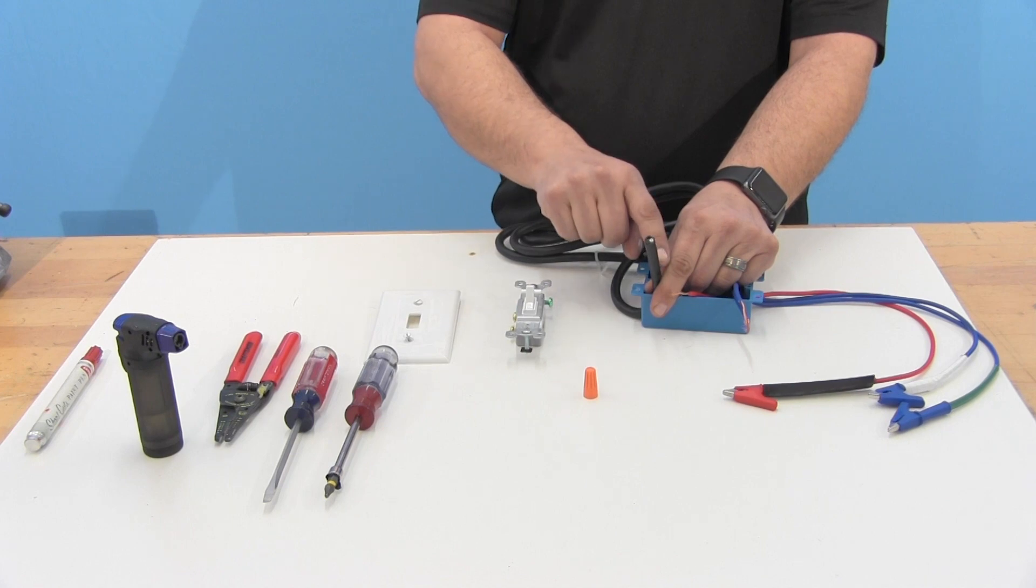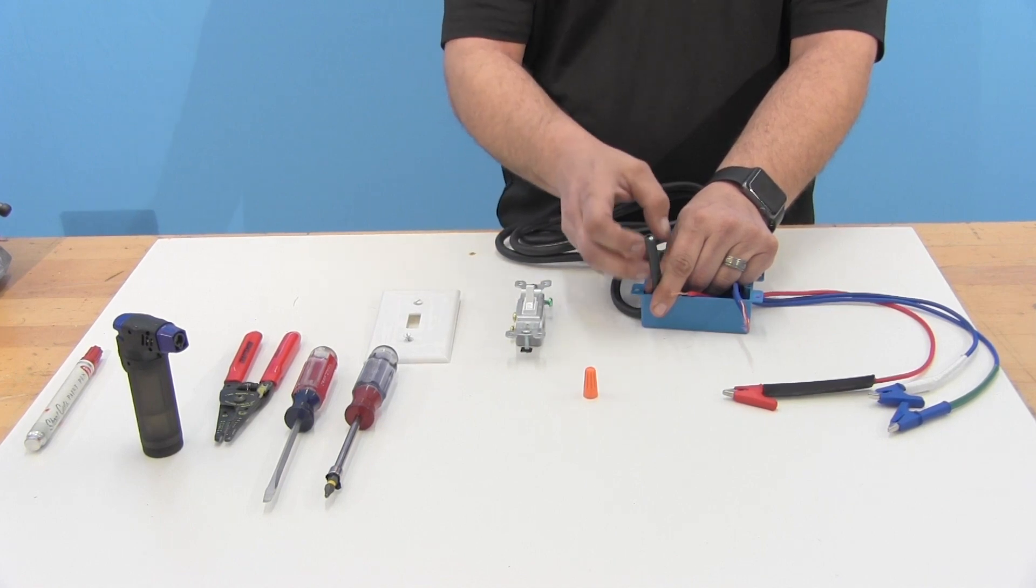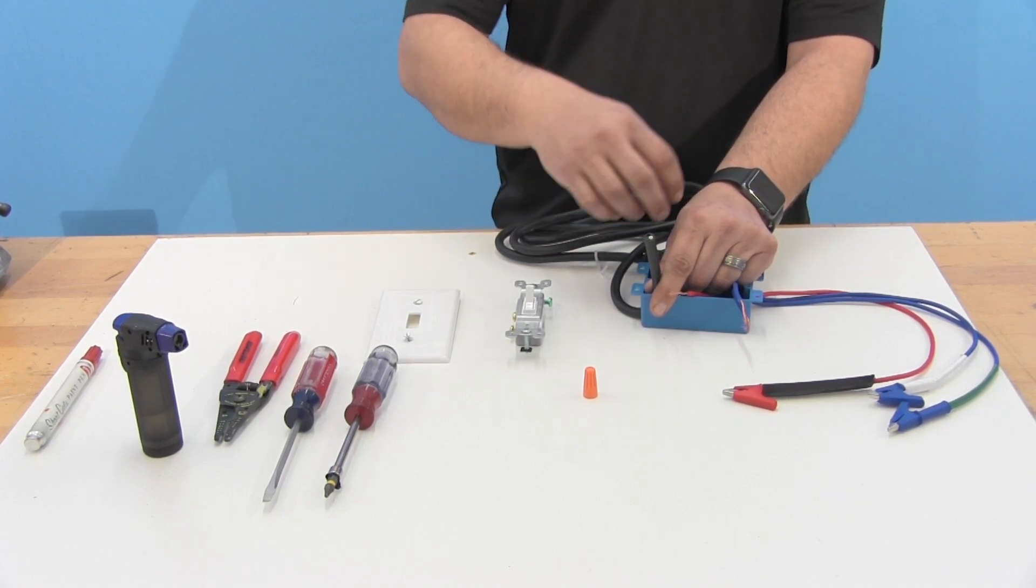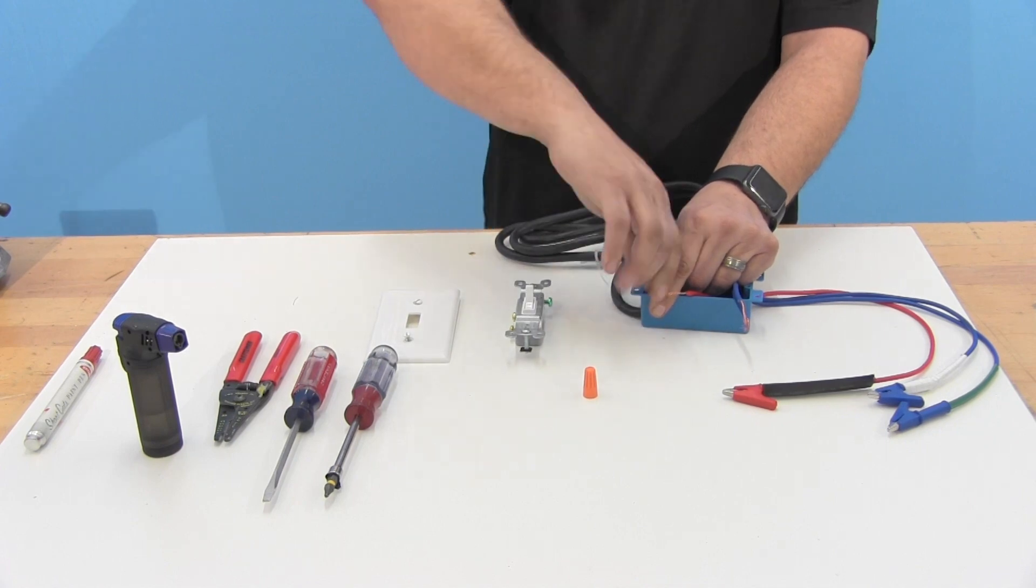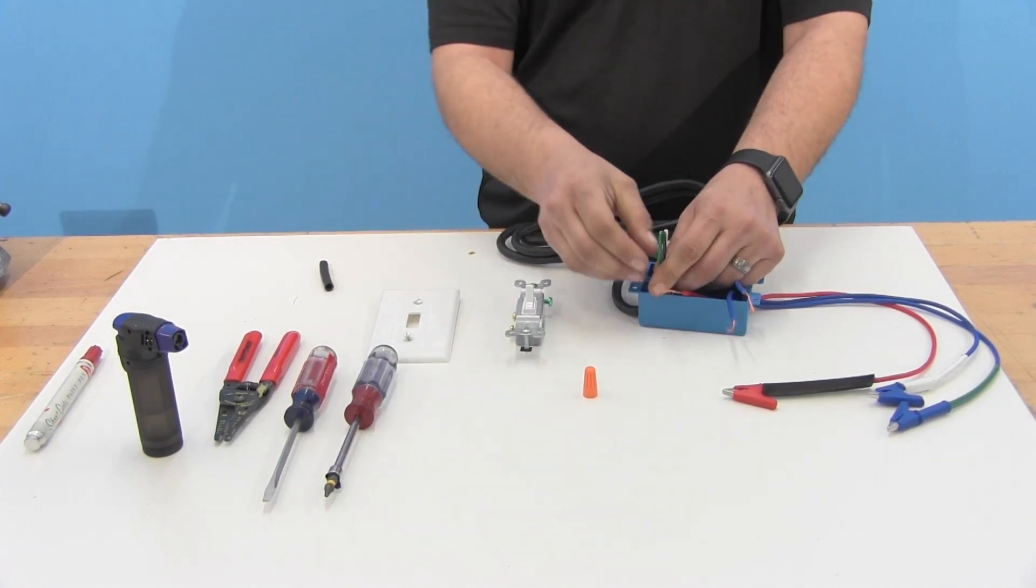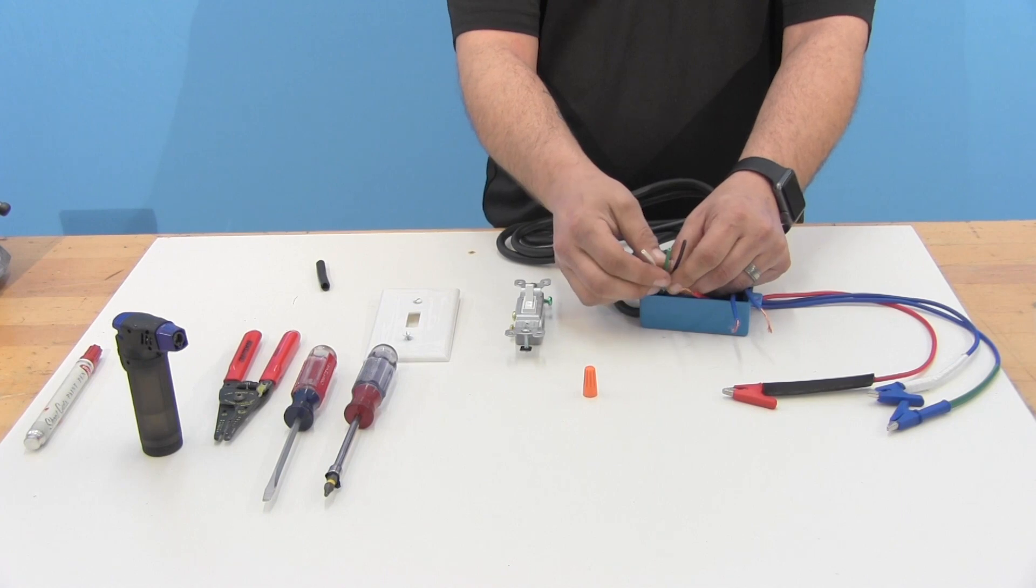And then also on the power supply cord, make sure when you're stripping this back, you're not going too deep and you're stripping back the actual wires inside the insulator here. So you'll want just about that much of wire there.